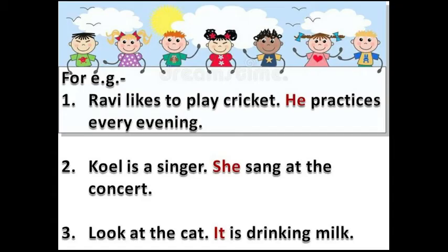For example: First, Ravi likes to play cricket. He practices every evening. Second, Koyal is a singer. She sang at the concert. Third, look at the cat. It is drinking milk. In these sentences, pronouns he, she and it are used instead of the names Ravi, Koyal and Cat.